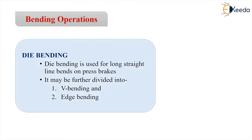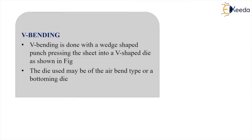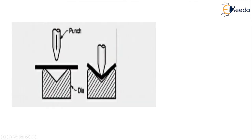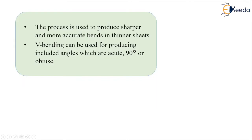Die bending is used for straight-line bends on press brakes. In die bending we have V bending and edge bending. V bending is done with a wedge-shaped punch pressing the sheet into a V-shaped die. The die used may be the air bend type or bottom bend type. The process is used to produce sharper and more accurate bends in thinner sheets.